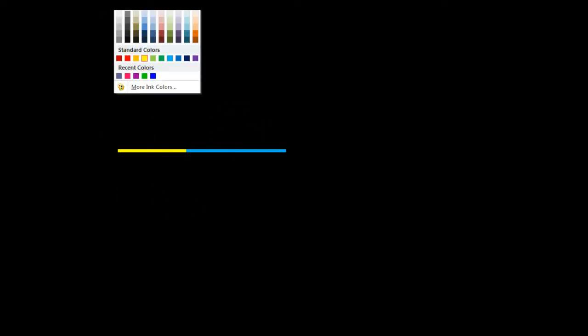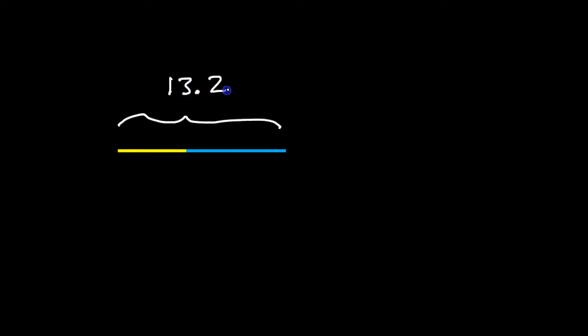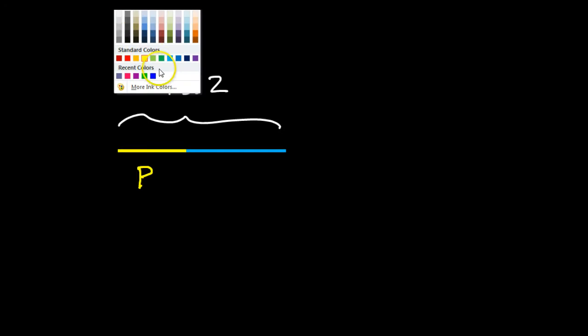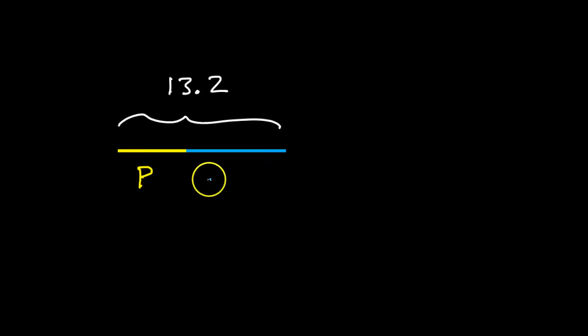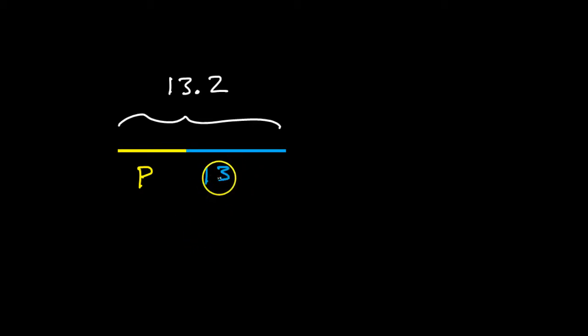Let's do that one more time. What if you know that the whole thing is 13.2, and the yellow part is p? Can you give me an expression for the blue part? The blue part would be 13.2 minus p.